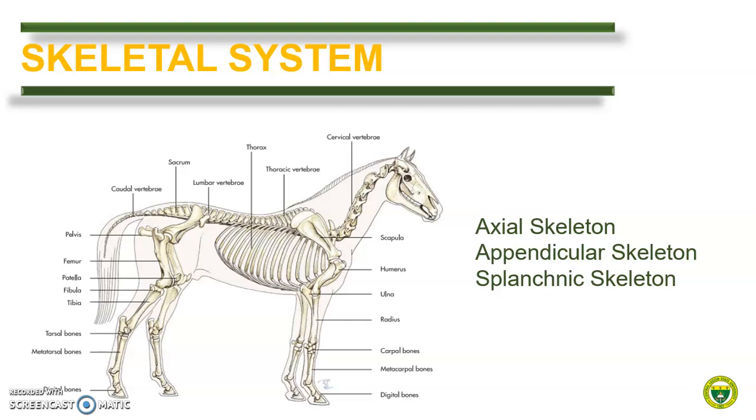We will divide this module into five topics. The first topic is on the comparative features of the bones of the head. The second will be on the other axial skeleton like the vertebrae, ribs, and sternum. The third and fourth topics will discuss the comparative features of the bones of the thoracic and pelvic limbs, respectively, while the last part will shortly discuss the splanchnic bones.